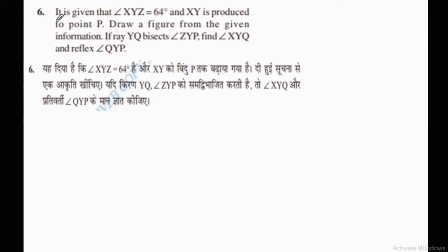The question is: it is given that angle XYZ equals 64 degrees, and XY is produced to point P. Draw a figure from the given information. If ray YQ bisects angle ZYP, find angle XYQ and reflex angle QYP.